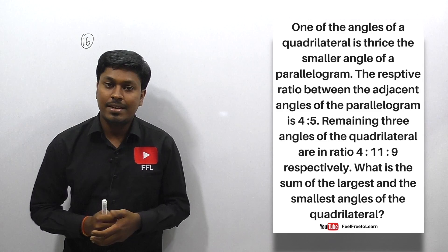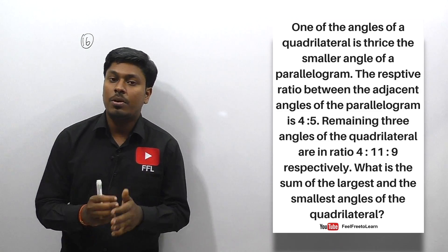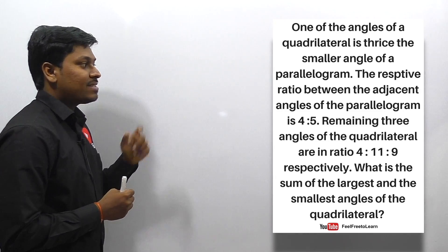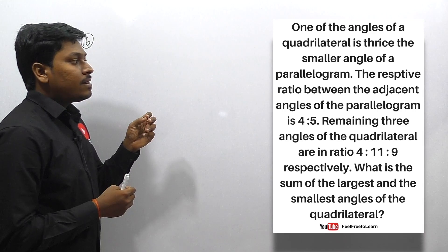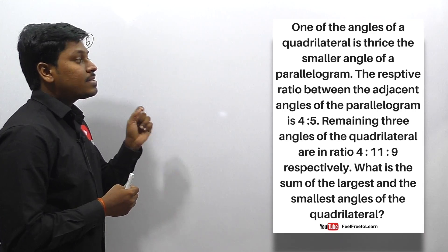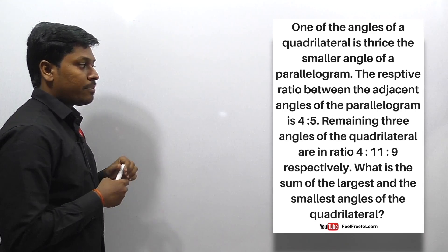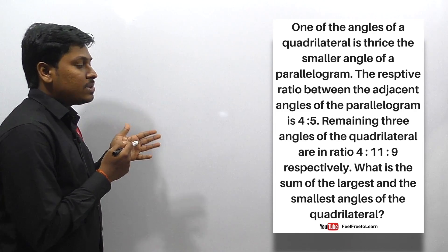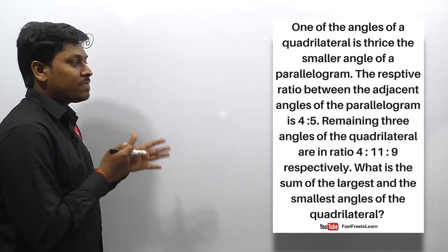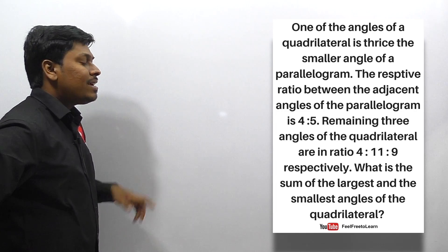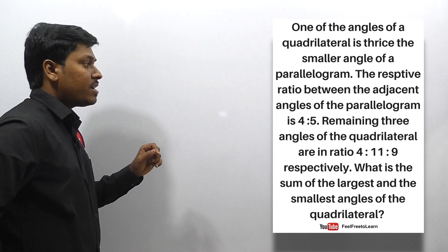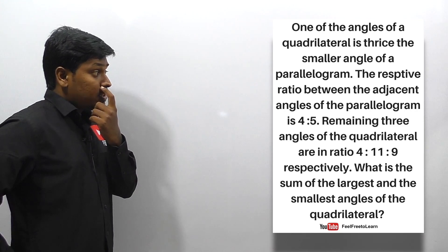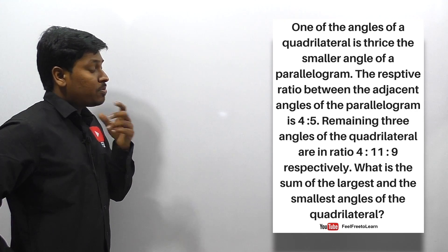Moving on to set number four on the topic of ratio and proportions. Question number 16: one of the angles of a quadrilateral is thrice the smallest angle of a parallelogram. The ratio between adjacent angles of a parallelogram is 4:5, and the remaining three angles of the quadrilateral are in a ratio 4:11:9. What is the sum of the largest and smallest angle of the quadrilateral?